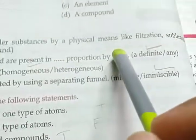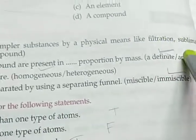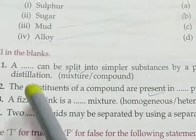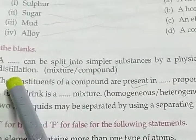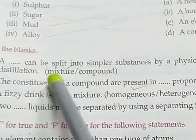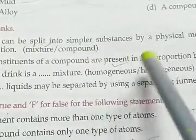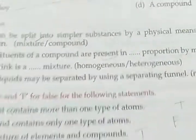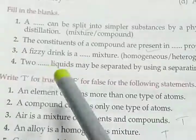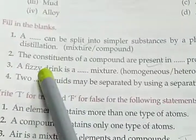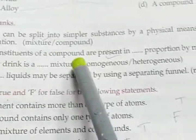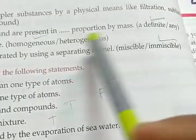Fill in the blanks. A mixture can be split into simpler substances by physical means like filtration, sublimation, and distillation. The constituents of compounds are present in a definite proportion of mass.